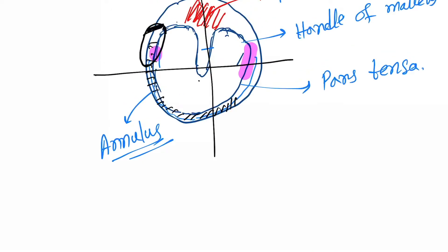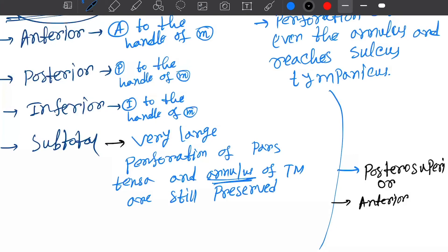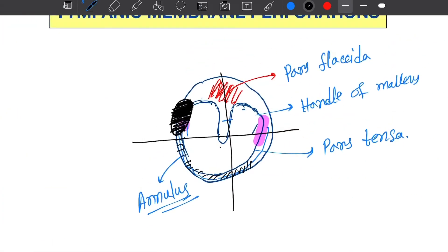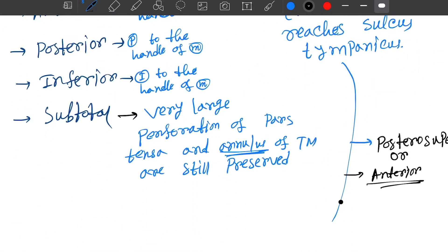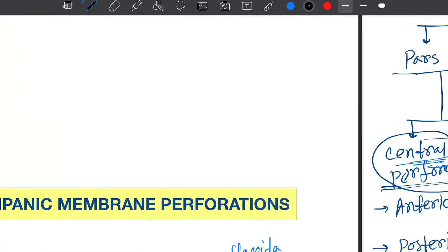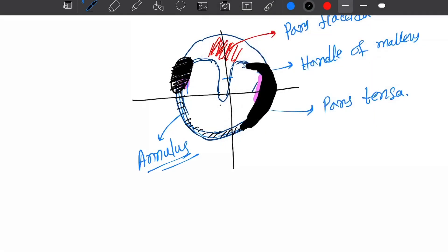Next one is the anterior marginal perforation — both the antero-superior and antero-inferior quadrants will be involved, so it will look like this. Next one is inferior marginal perforation — the perforation will be in the inferior region, so it will look like this.